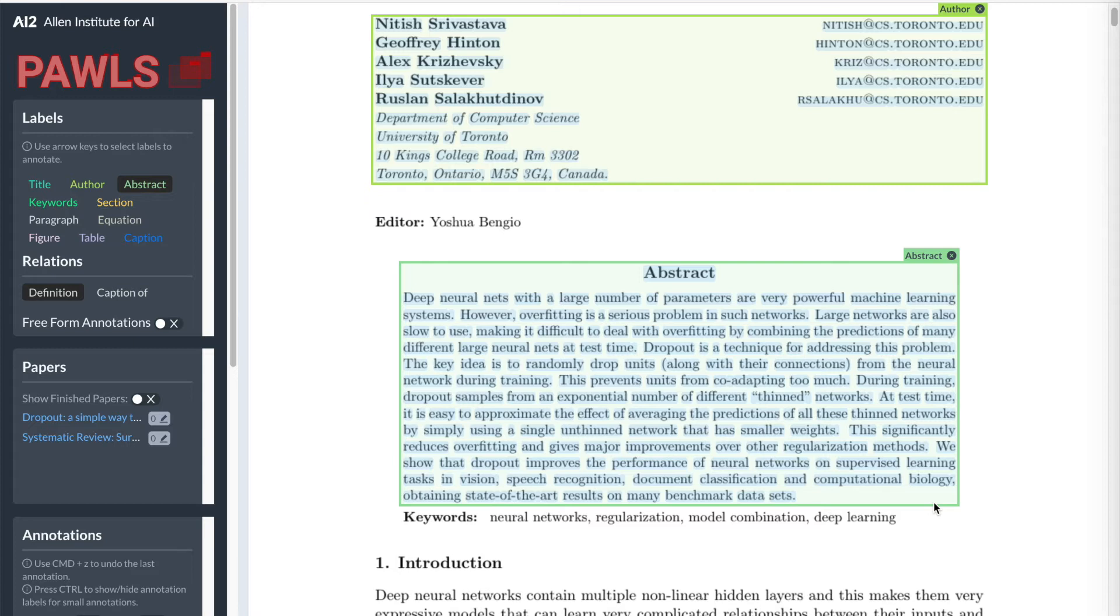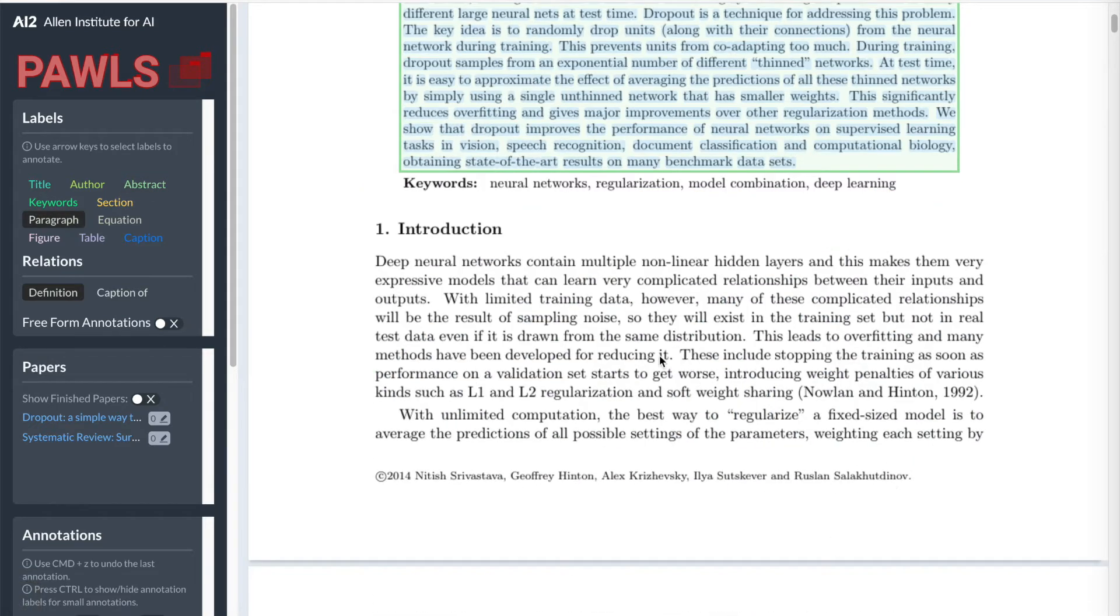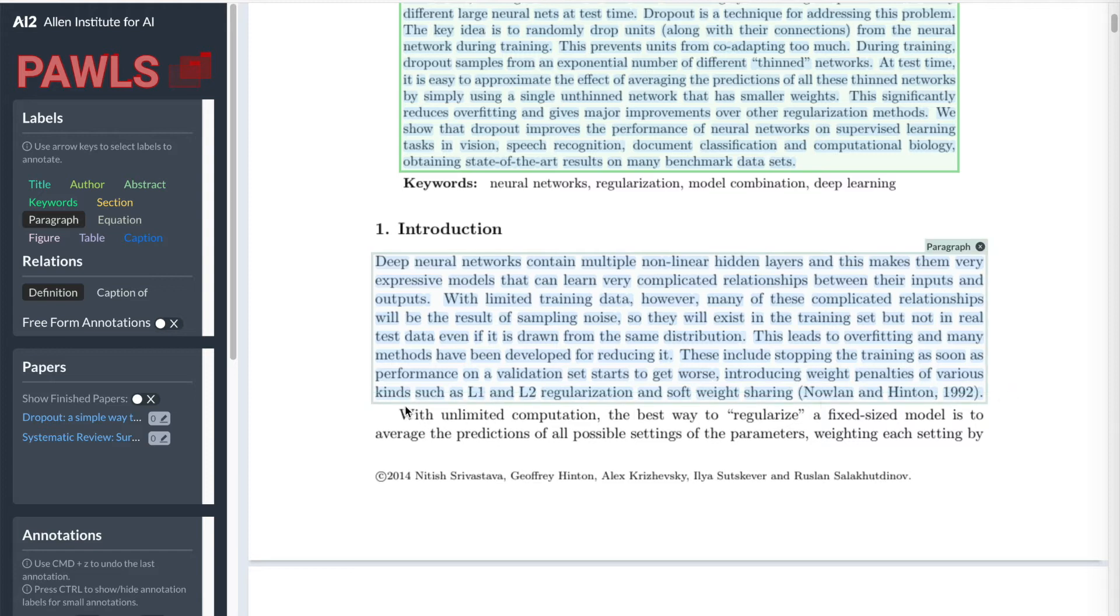This is the block snapping function we built that regularizes the blocks according to the content tokens. The block snapping function significantly improves the labeling efficiency and accuracy, especially when annotating text-dense regions.